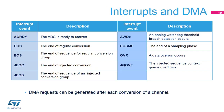Each ADC can generate nine different interrupts: ADC ready, end of conversion, end of sequence, end of injected conversion, end of injected sequence, analog watchdog, end of sampling, data overrun, and overflow of the injected sequence context queue.